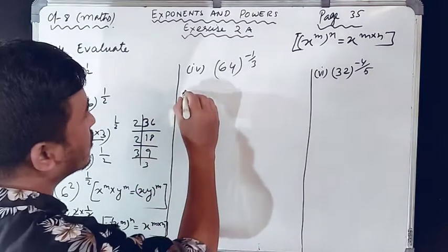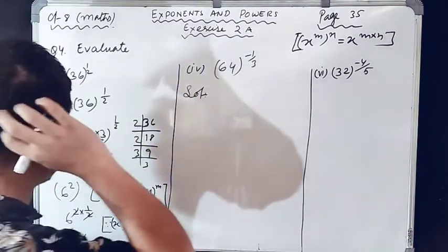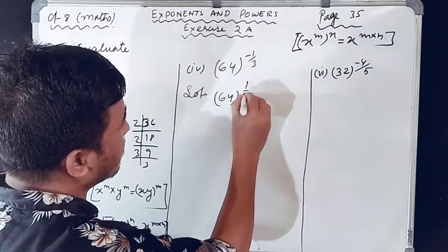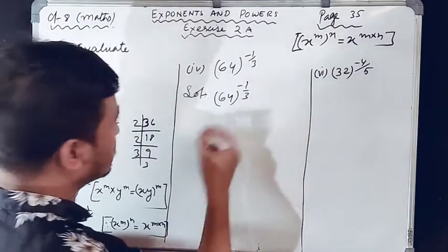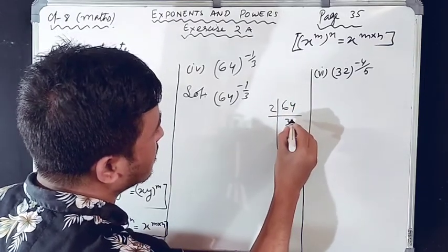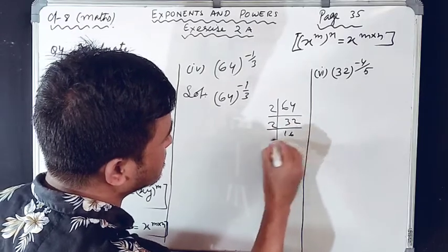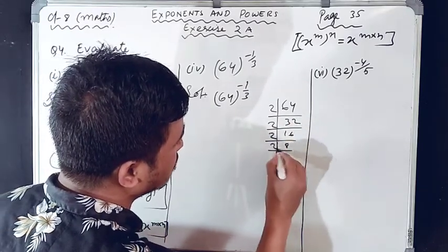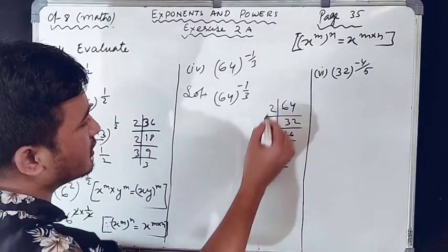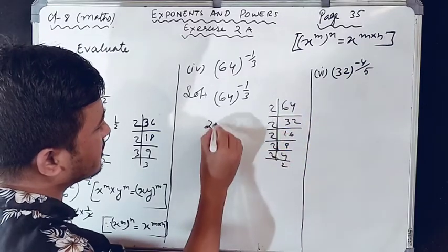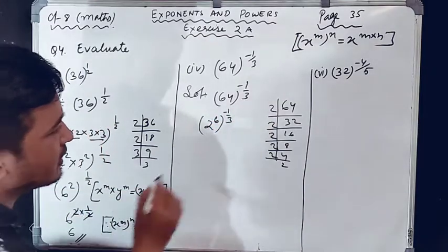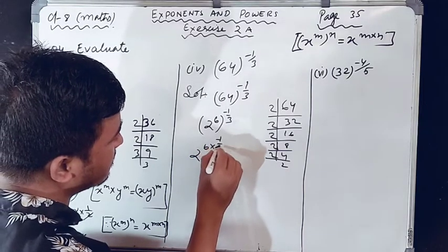Question number 4: 64 raised to the power minus 1 by 3. Write 64 in exponential form using prime factorization. Dividing repeatedly by 2: 64 equals 2 to the power 6. So write 2 raised to the power 6, whole raised to the power minus 1 by 3. By Law 4: multiply exponents, 6 into minus 1 by 3 gives 2 into minus 1 which is minus 2. So we get 2 raised to the power minus 2.